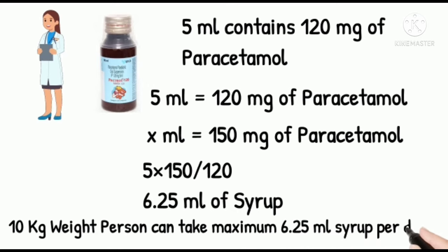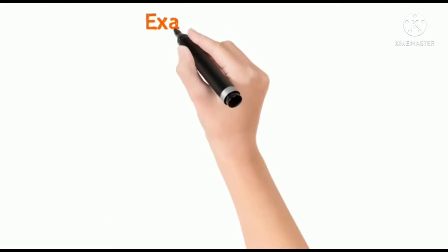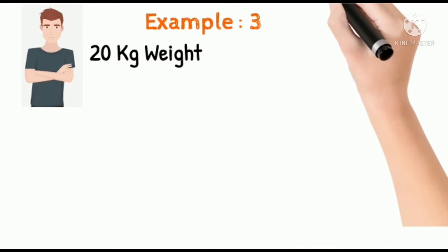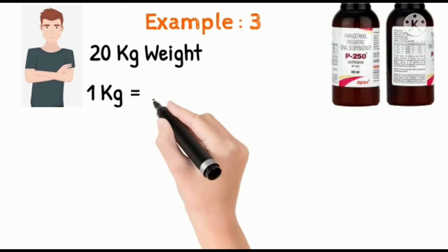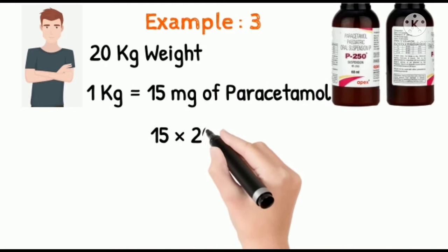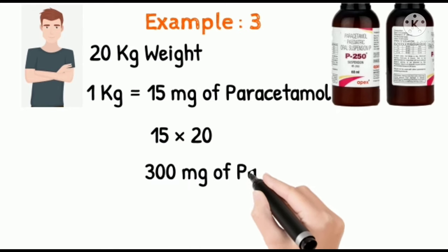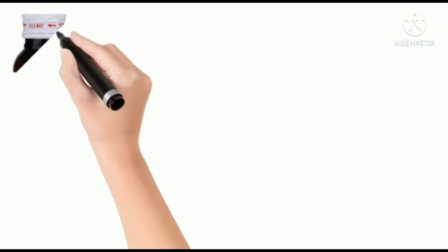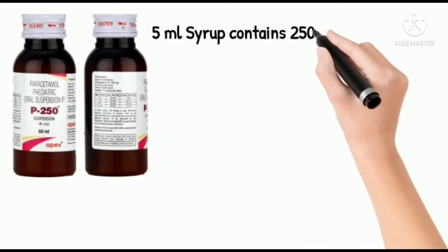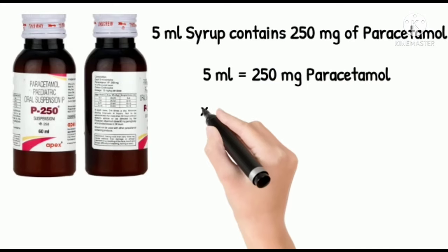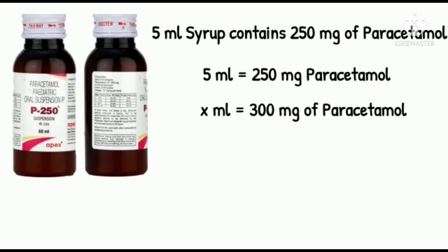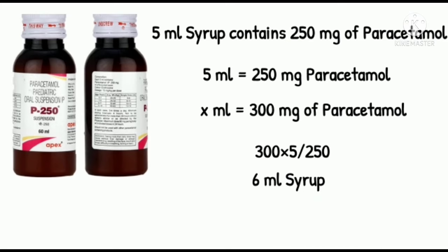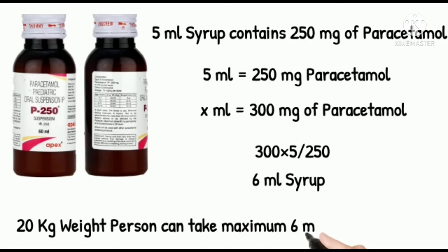So a 10 kg body weight person should have a maximum of 6.25 ml of paracetamol per dosage. Now for another example: if a 20 kg weight person is prescribed P250 syrup, the maximum is 15 milligrams per kg, so 15 into 20 is 300 milligrams per dosage. In P250 syrup, 5 ml contains 250 milligrams. For 300 mg: 5 by x equals 250 by 300, that is approximately 6 ml of syrup. So a 20 kg weight person can have a maximum of 6 ml of syrup per dosage.